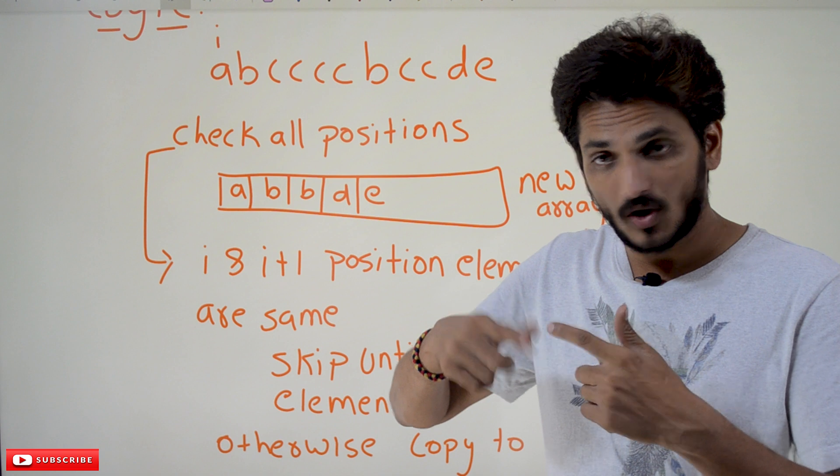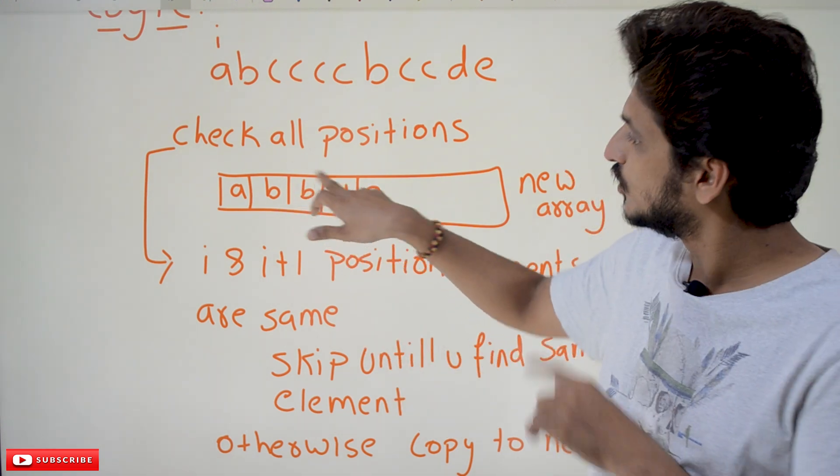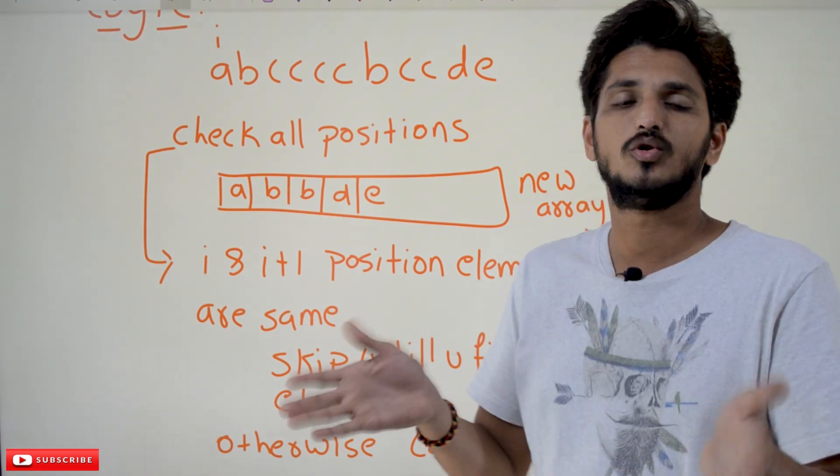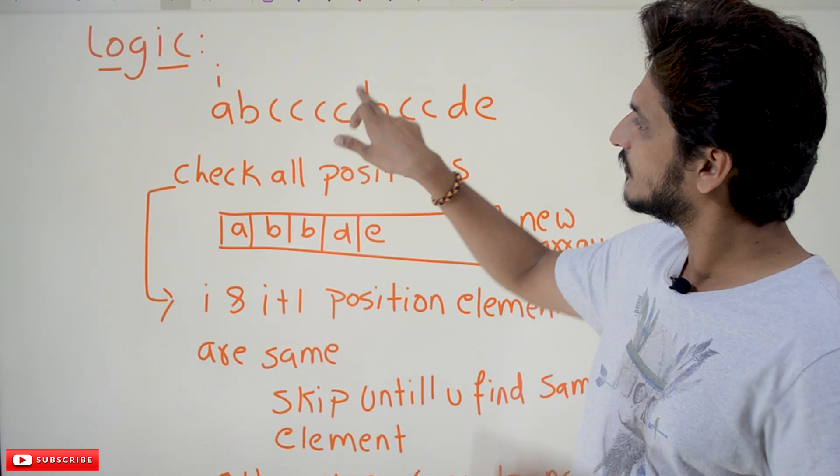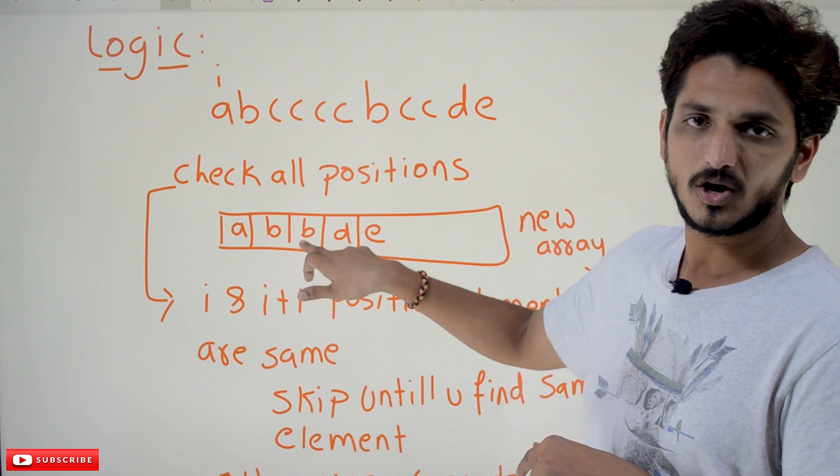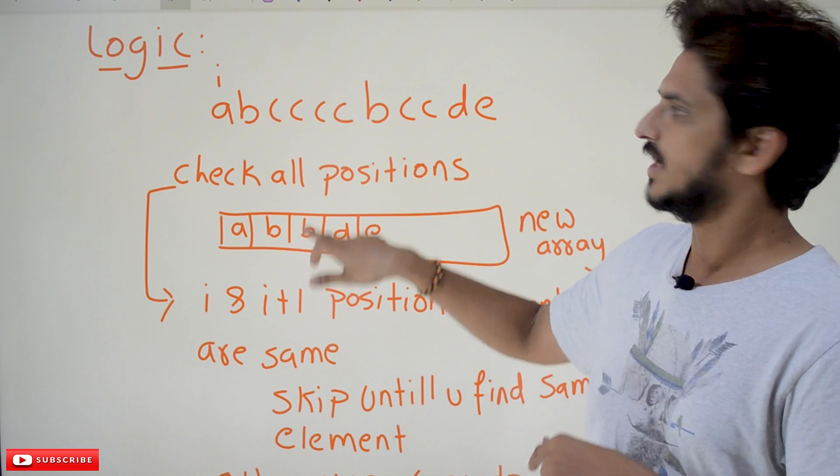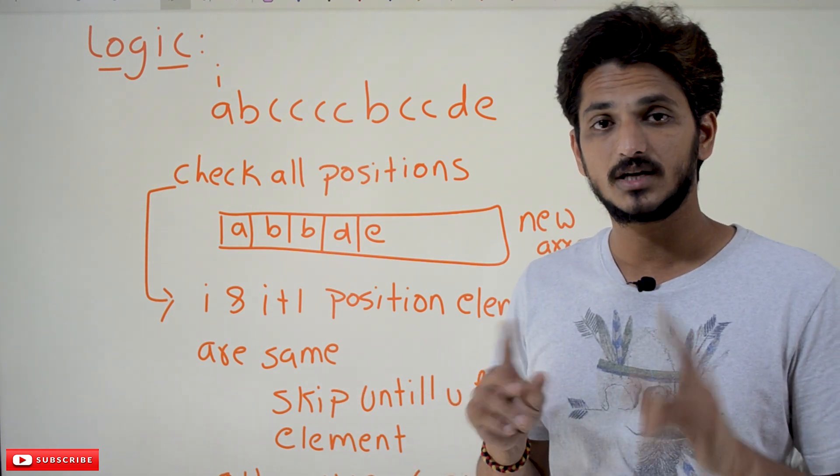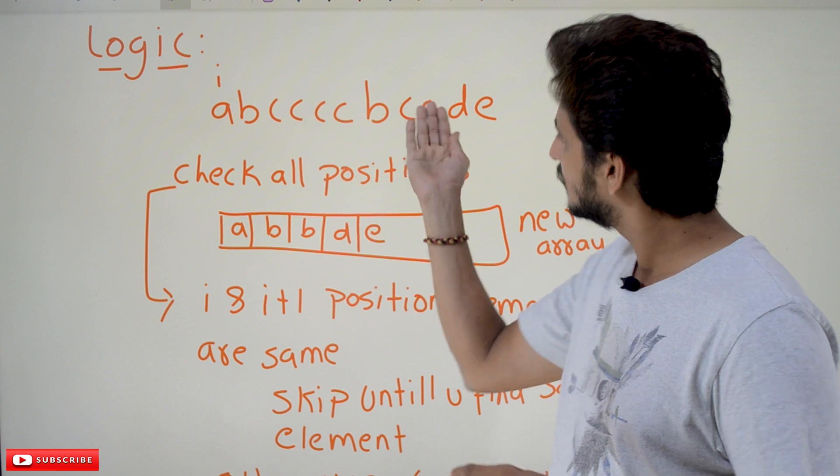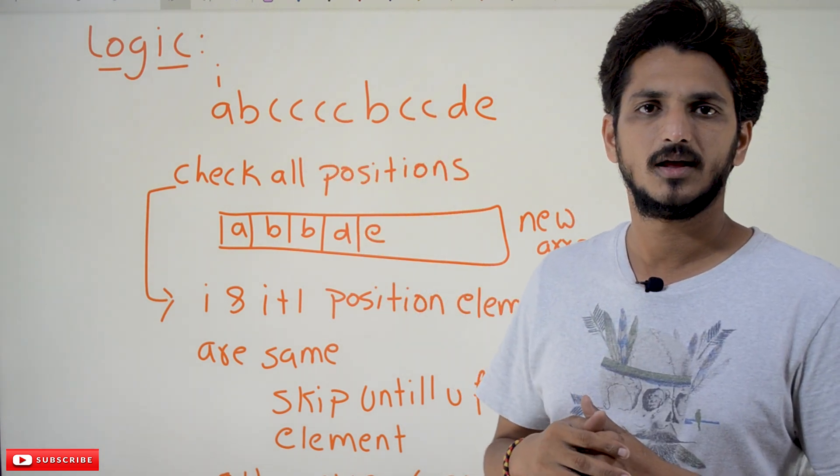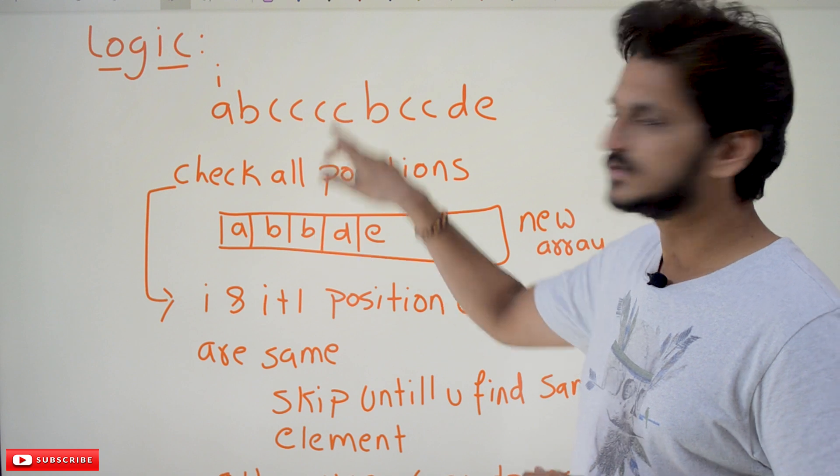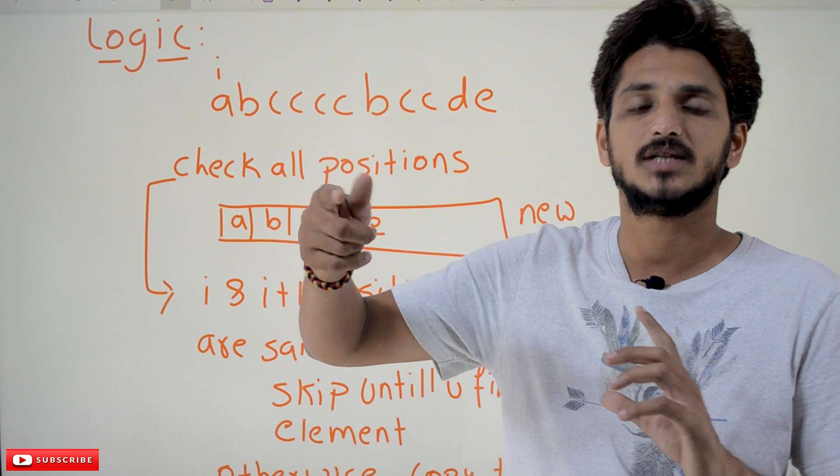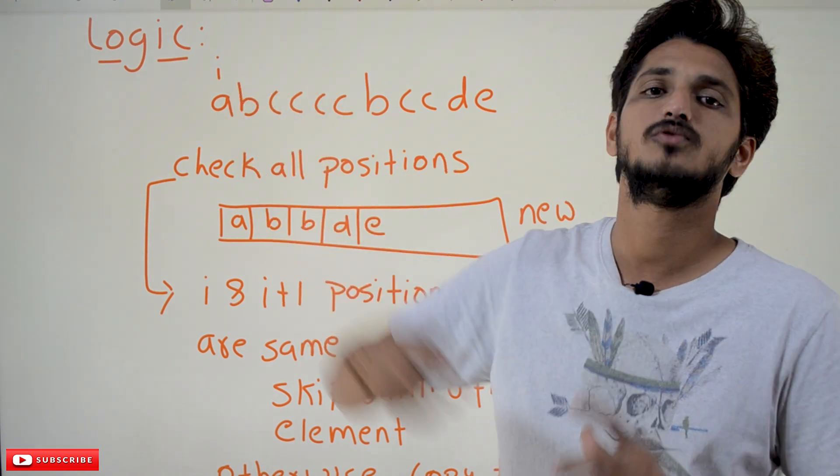So recursively call the functions until there is no duplicates. How you are going to identify that there are no duplicates? Suppose this is the input string. After applying the logic, what is the output string you got? This is the output string. Is this two strings are same? No, they are different. Whenever they are different means, we removed some characters from the input string. If both are same means, there is no duplicates. You can stop calling the recursive function. That is what the condition for recursive function call.